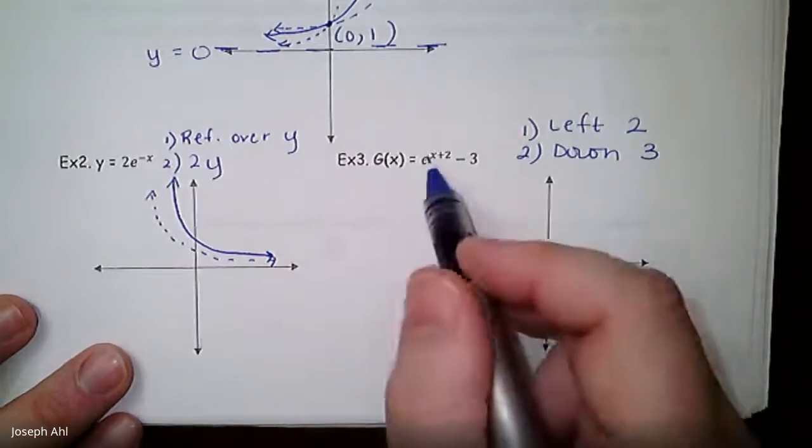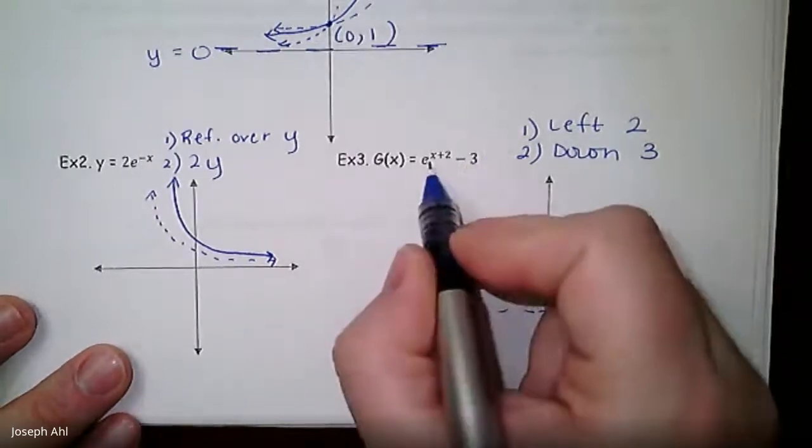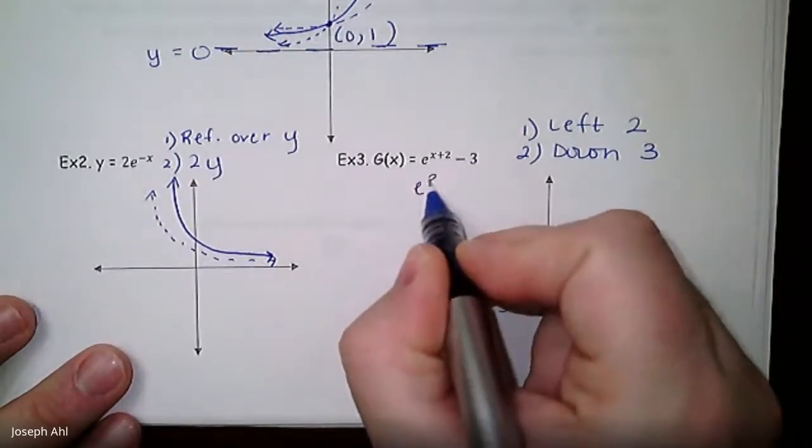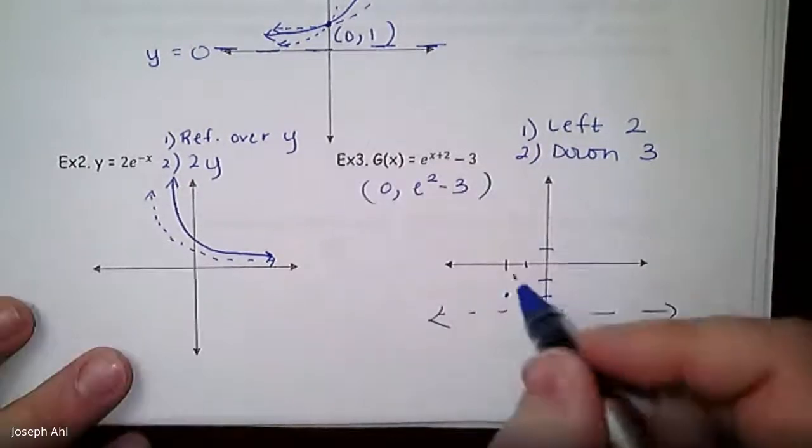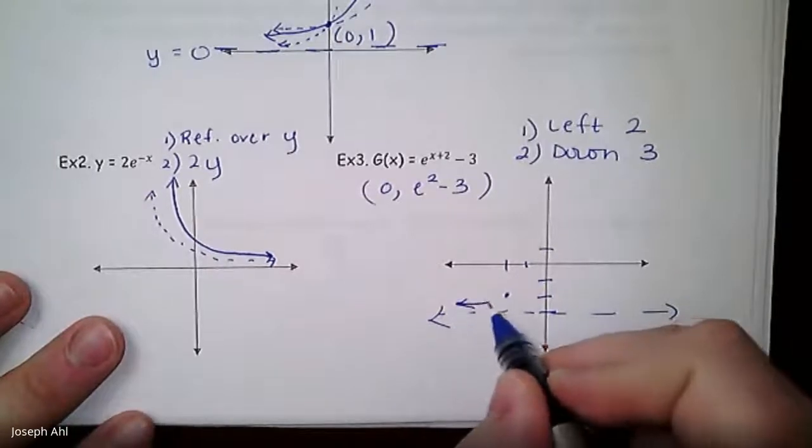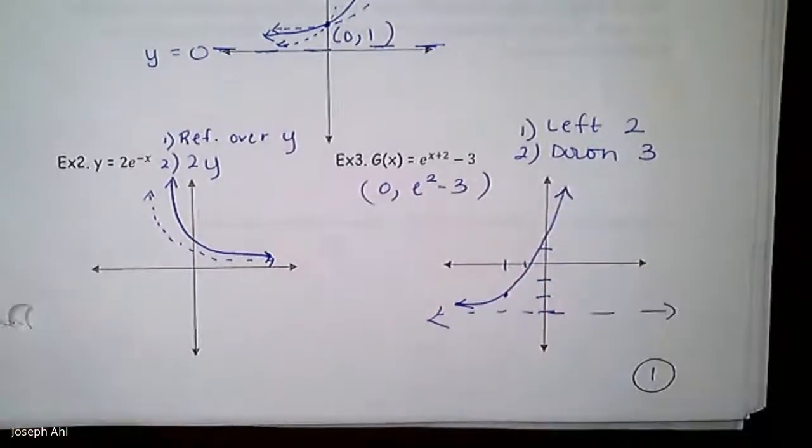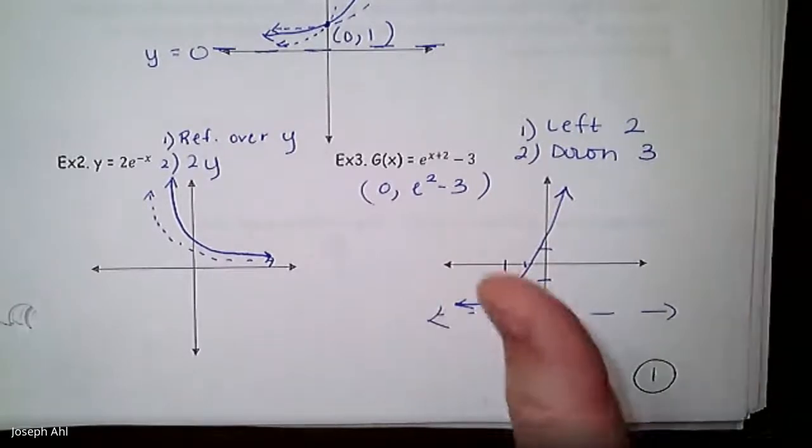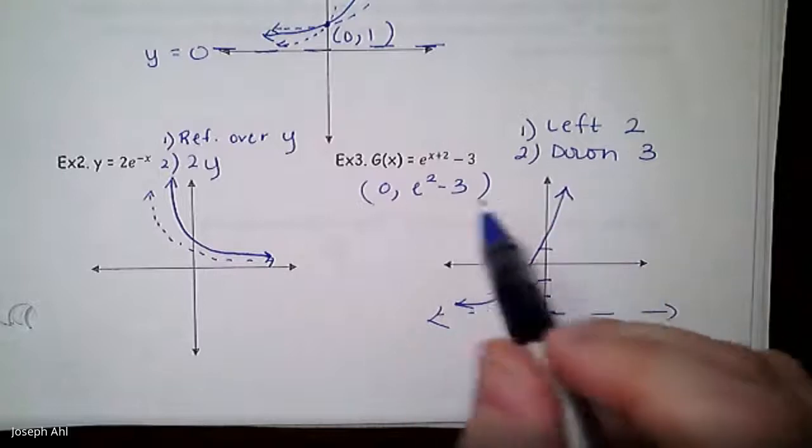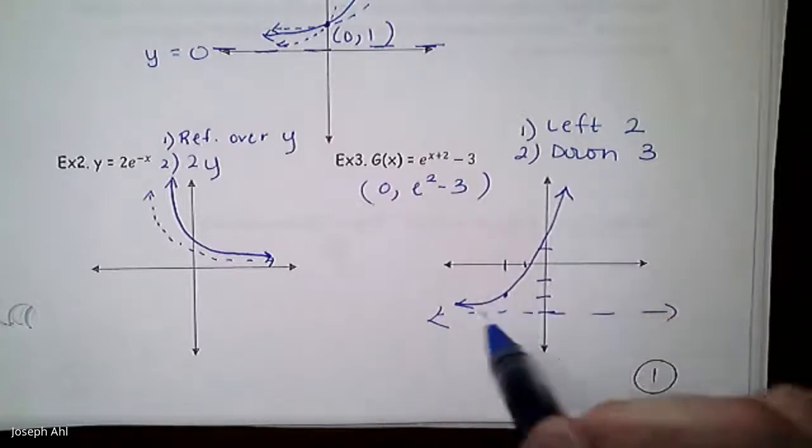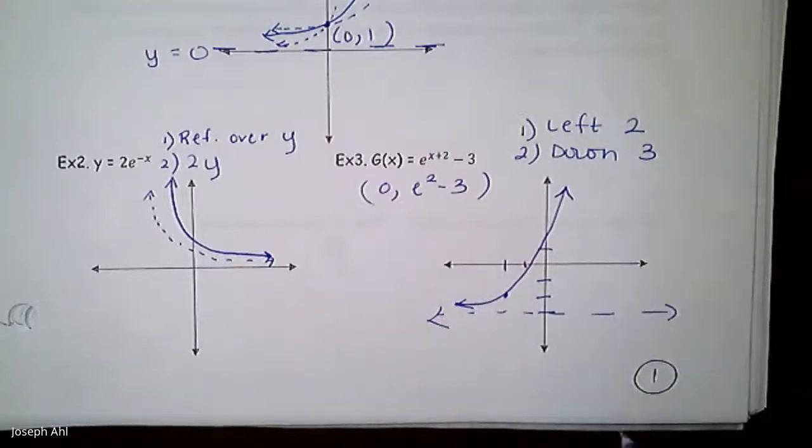We're also going to move this graph to the left 2. So if you want to plot even just one point for accuracy purposes, the y-intercept was at (0,1) to start on the parent. It's going to go left 2, and it's going to go down 3. So actually the point (-2,-2) is on this graph. If I wanted to find the y-intercept, it's not a nice value, is it? It's going to be if I plug in 0 for x, e^2 - 3, whatever that is. It's some positive amount, but if you were to sketch the graph, you're going to get something that looks like this.